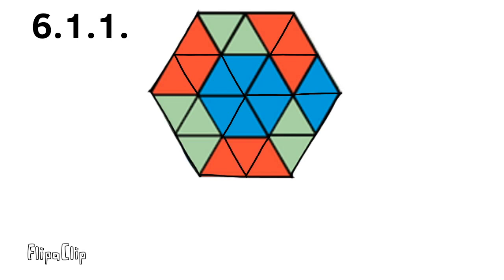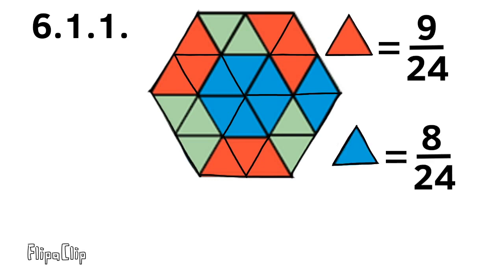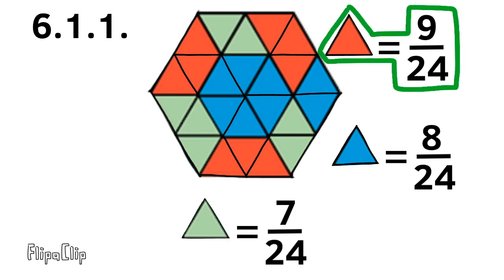In total, this shape has 24 triangles. Nine of those triangles are red, eight of those triangles are blue, and only seven of those triangles are green. This tells me that the red trapezoids cover more.